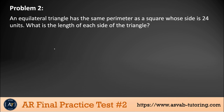Next problem: an equilateral triangle has the same perimeter as a square whose side is 24 units. What is the length of each side of the triangle? You have two figures here. Let's draw two figures to make life easier — draw a square and also an equilateral triangle.